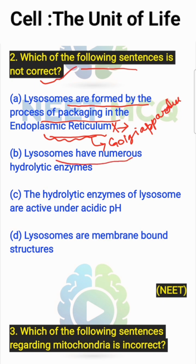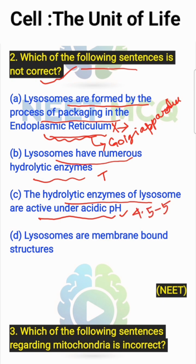Lysosomes have numerous hydrolytic enzymes — that is true. Hydrolytic enzymes of lysosomes are active under acidic pH, typically around pH 4.5 to 5 — that is also true. Lysosomes are membrane-bound structures; they are single membrane-bound structures. So the incorrect statement is option A.